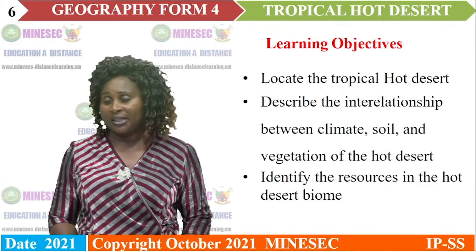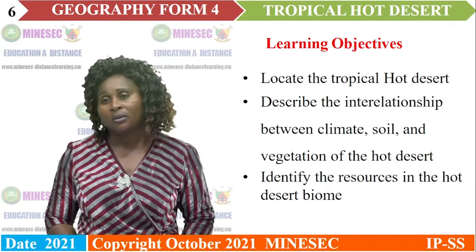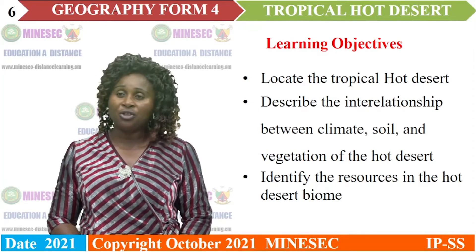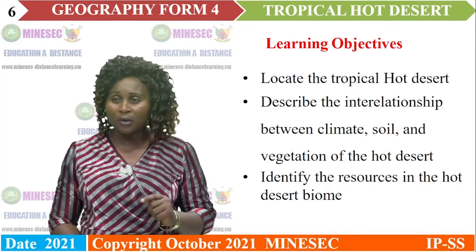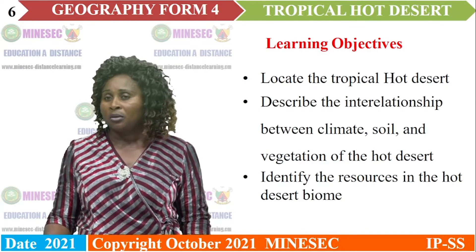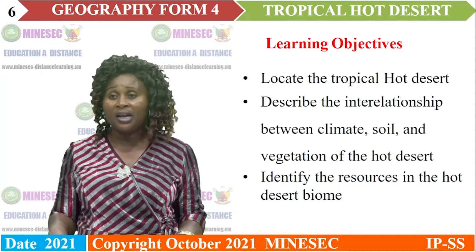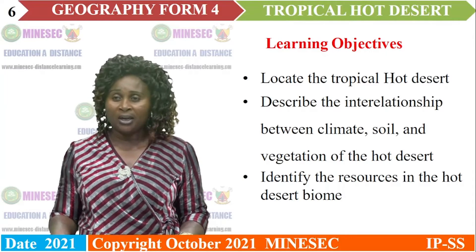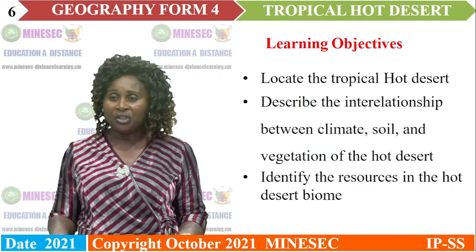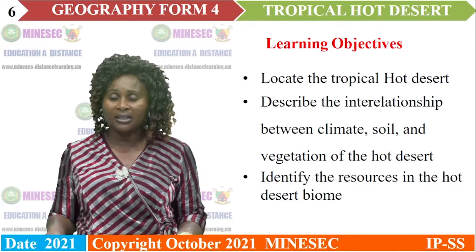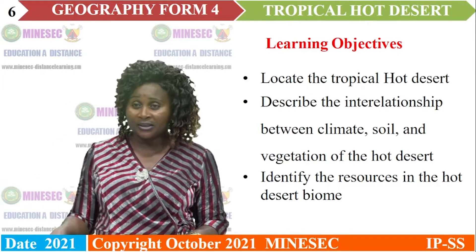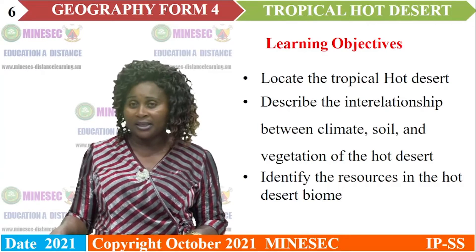Learning objectives: by the end of this lesson, learners should be able to locate the tropical hot desert, describe the interrelationship between climate, soil and vegetation of the hot desert, and identify the resources of the hot desert.